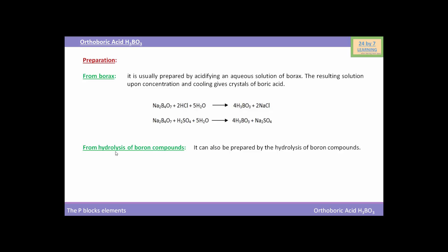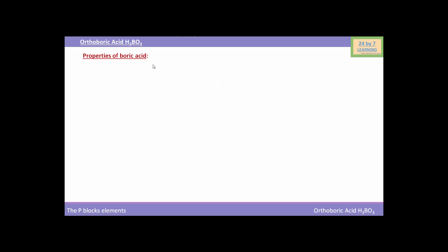Now we will see the preparation of orthoboric acid from hydrolysis of boron compounds. It can also be prepared by the hydrolysis of boron compounds. BCl₃ when reacted with water forms H₃BO₃ (orthoboric acid) and HCl. Similarly, another boron compound BN when reacted with water also forms orthoboric acid H₃BO₃ and ammonia.